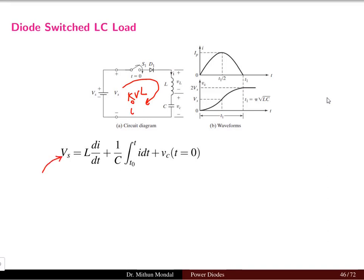If we apply the KVL equation in this load for which current i is flowing, then the source voltage Vs can be written as L di/dt, which is the voltage across the inductor, plus (1/C) integral i dt, which is the voltage across the capacitor. The time limit is from t0 to t. It is considered that the initial voltage present in the capacitor is Vc at time t equal to zero.